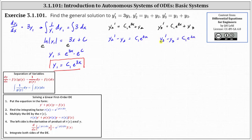For both equations, p of x equals negative one, so the integrating factor r of x equals e to the integral of negative one dx, which means the integrating factor is e to the negative x.